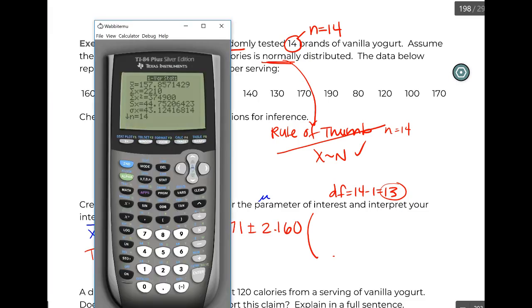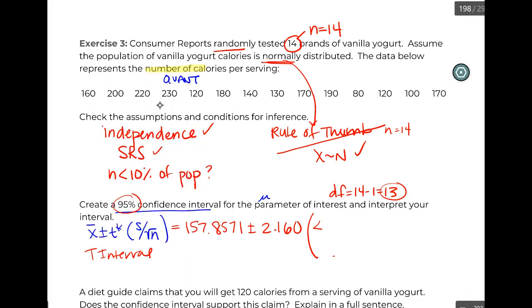Our s is going to be in our output on our calculator. There's our sx, that's it: 44.7521, and square root of 14.